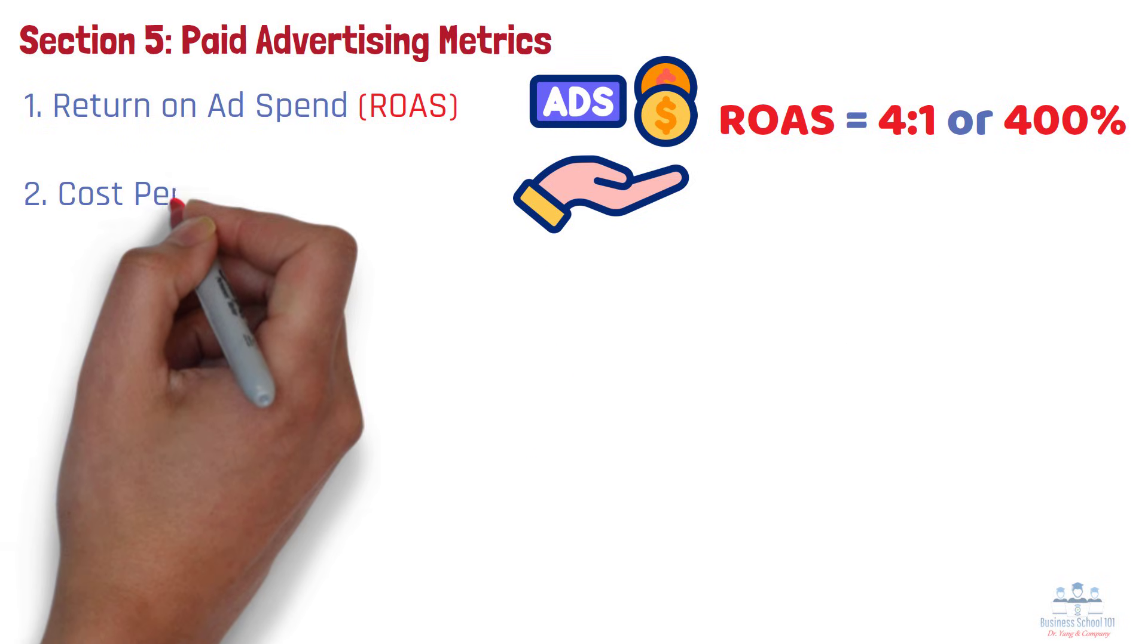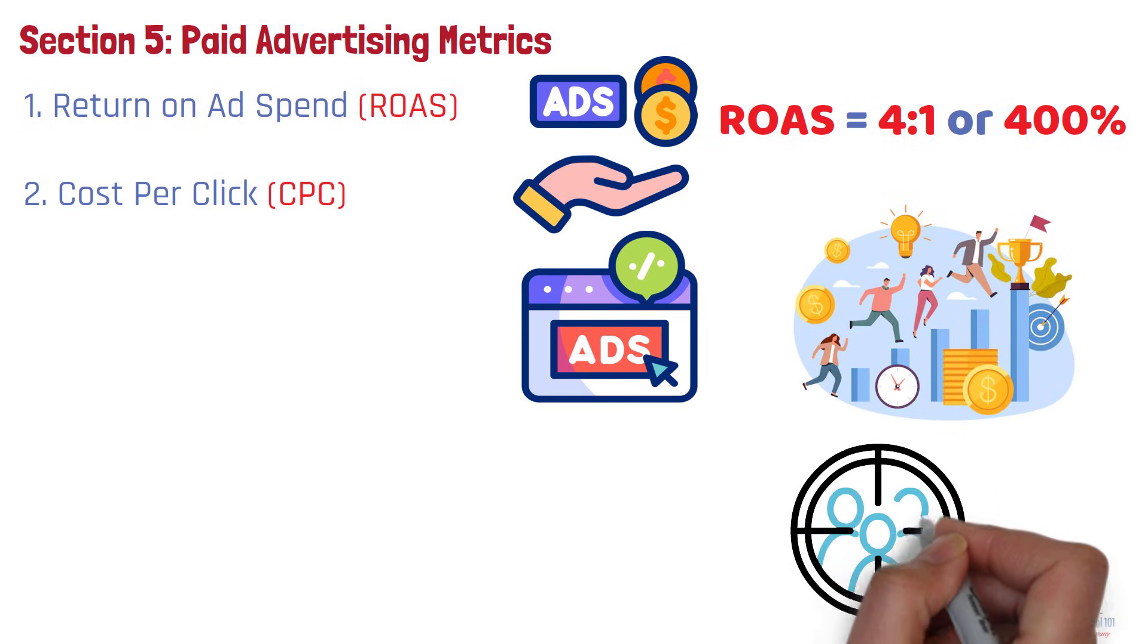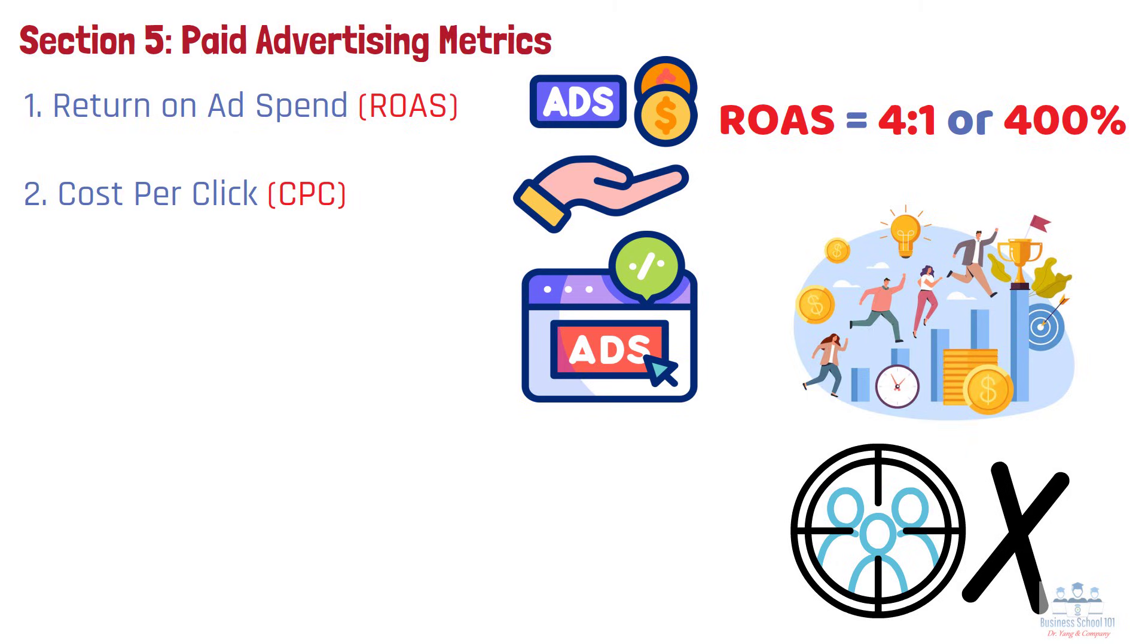Number 2. Cost-per-click, CPC. It tells you how much you're paying for each click on your ad. A high CPC may mean you're in a competitive market or targeting the wrong audience. Lowering CPC while maintaining conversions improves overall campaign efficiency.